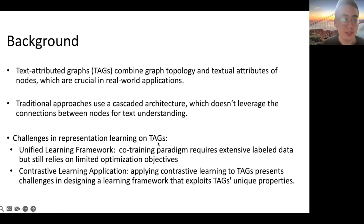We begin with the background. Text-attributed graphs combine graph topology and textual attributes of nodes, which are crucial in real-world applications, while the traditional approaches use a cascaded architecture, which doesn't leverage the connections between the nodes for text understanding.